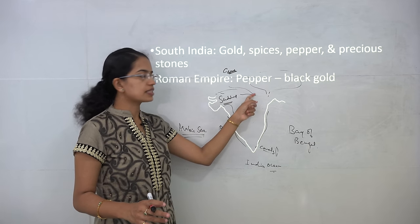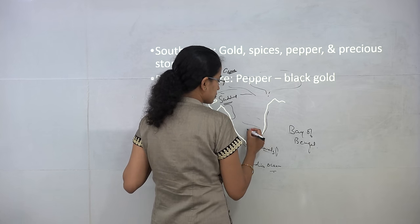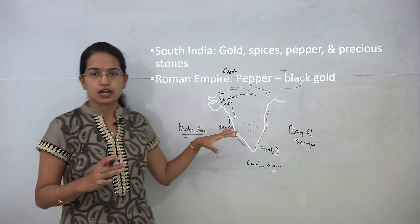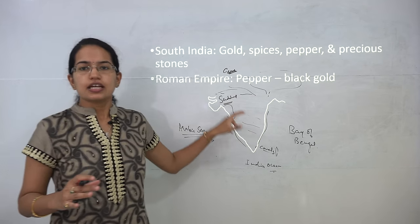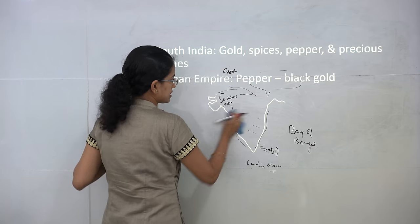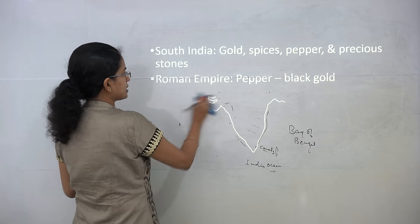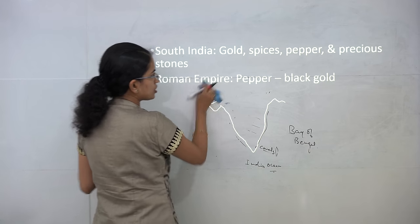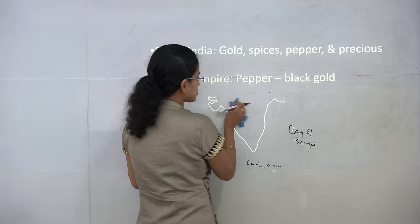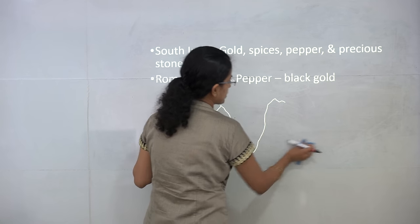Similar dynamics played out in the south. Rivers like the Kaveri, Krishna and Godavari formed major fertile belts, and most kingdoms were established along these river basins. Among the major commodities traded in south India were gold, spices, pepper and precious stones. Pepper was known as 'black gold' in the Roman Empire and was exported from India to Rome.